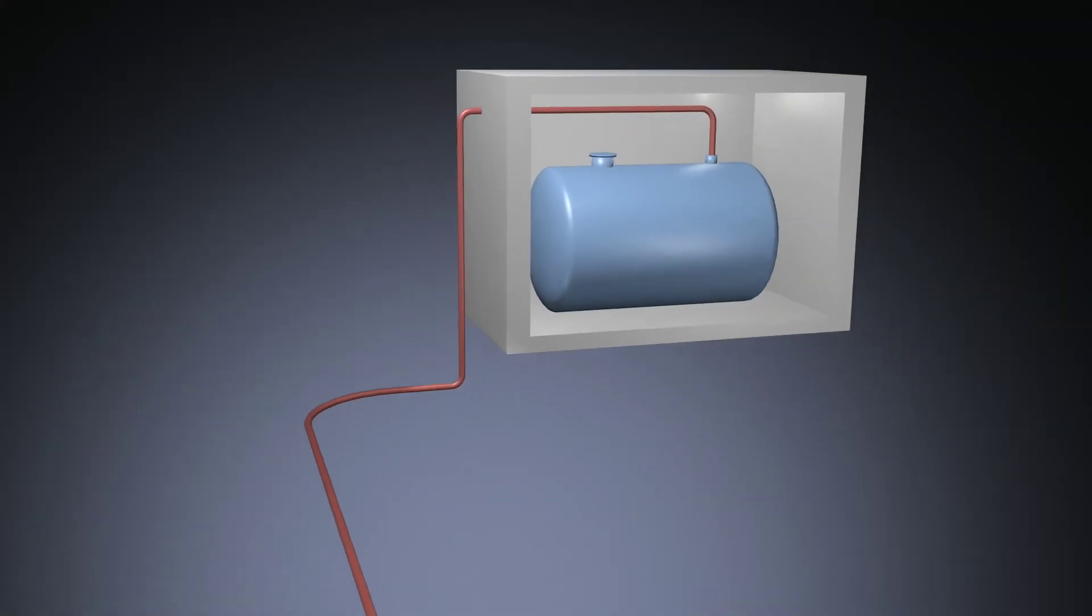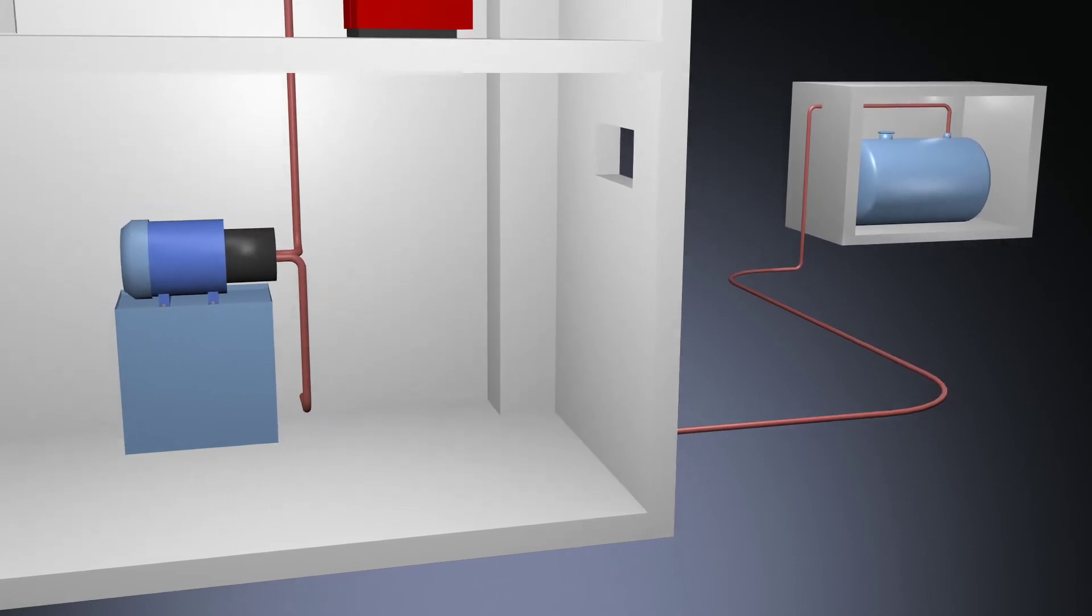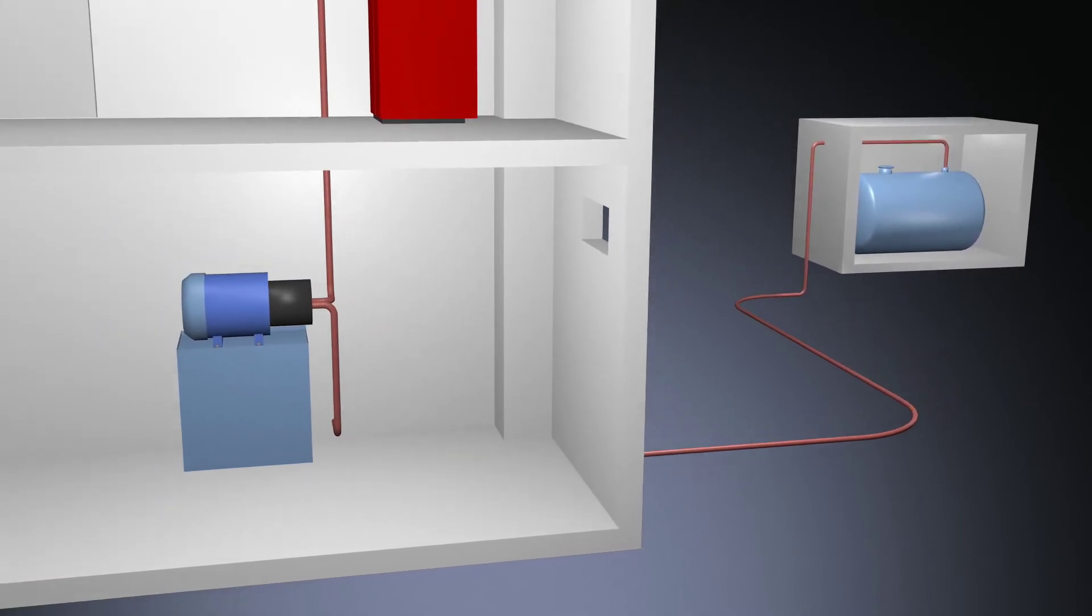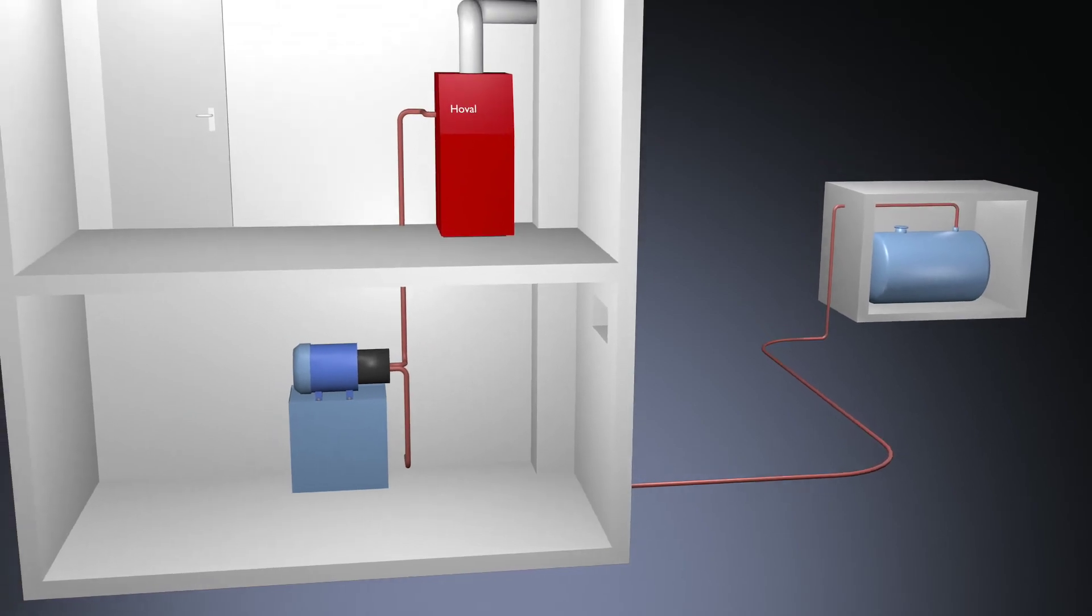La pompe de transfert s'avère nécessaire lorsque la citerne se trouve trop éloignée de la chaudière, par exemple dans le jardin. Dans ce cas, c'est la tuyauterie entre la pompe et la chaudière qui est à dimensionner correctement.